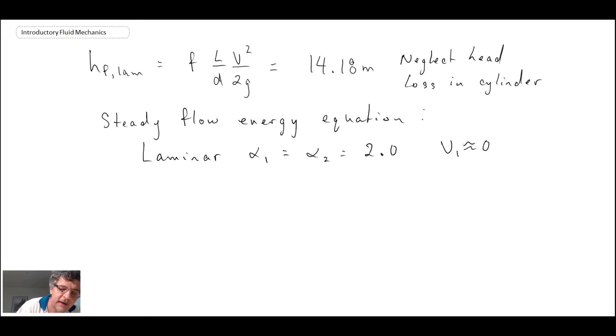Writing out the steady flow energy equation between states 1 and 2: (P₁ - P₂)/ρ + g(z₁ - z₂) + (½)α₁V₁² - (½)α₂V₂² = gh_f. When we look at this equation, we can make one cancellation to begin with. We're assuming that the velocity in the larger cylinder section is approximately equal to zero.